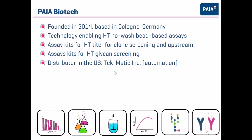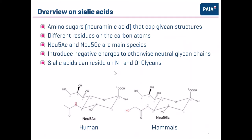Now getting into the topic of sialic acids and sialated glycans. Sialic acids are amino sugars based on neuraminic acid that cap the glycan structures present on glycoproteins. Here on the bottom you see a neuraminic acid: on the five position you have the amino function, on the two position you have the carboxyl group, and on the remaining positions you can have different kinds of residues, which creates quite some diversity. There are something between 50 and 60 different sialic acids known at this point.